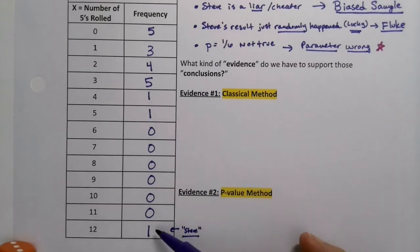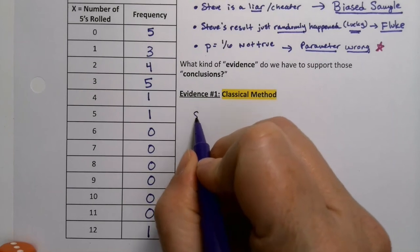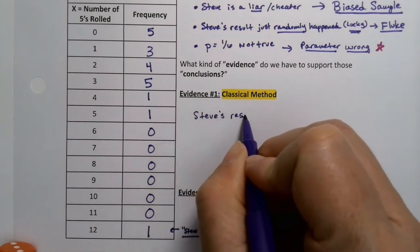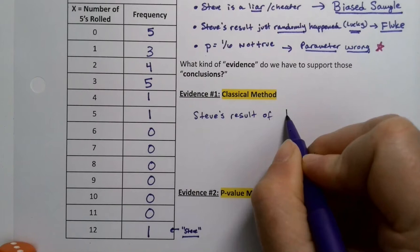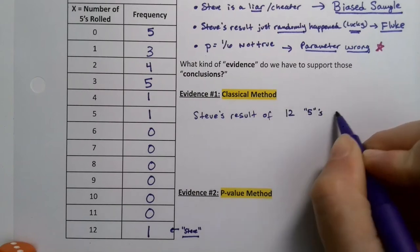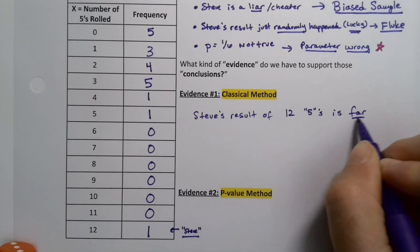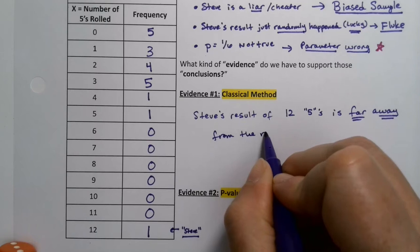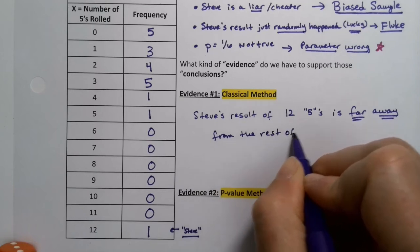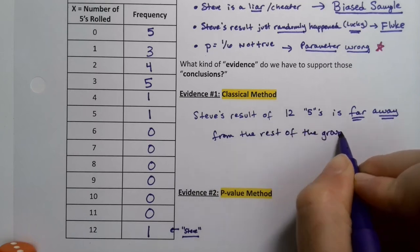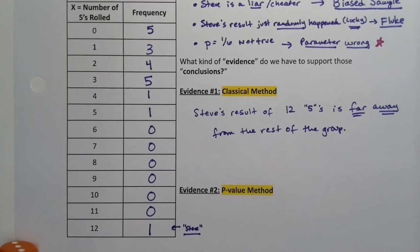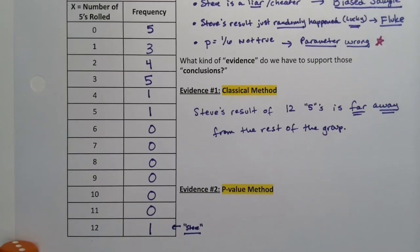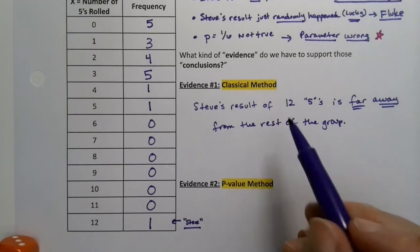Well, the parameter's wrong rather than the fluke, for example. One is that he is so far away from the rest of the group. His Z score would be huge. So his result, Steve's result of 12 fives is so far away from the rest of the group. And yes, these are real data. This was a real student. He wasn't named Steve. Steve's my husband's name. I figured I might as well pick on him. So from the rest of the group.